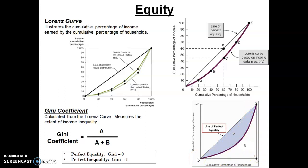If we had perfect inequality, area A would occupy the entire space, leaving B as 0. If B goes to 0, you have A over A and a Gini of 1. So the Gini coefficient ranges from 0 to 1 — as we move towards a more unequal income distribution we get closer to 1, and as we move towards a more equal distribution we get closer to 0. The U.S. would not only have a Lorenz curve moving further from perfect equality, we'd also see the Gini coefficient moving closer to 1 — that's how we measure changes in income inequality over time.